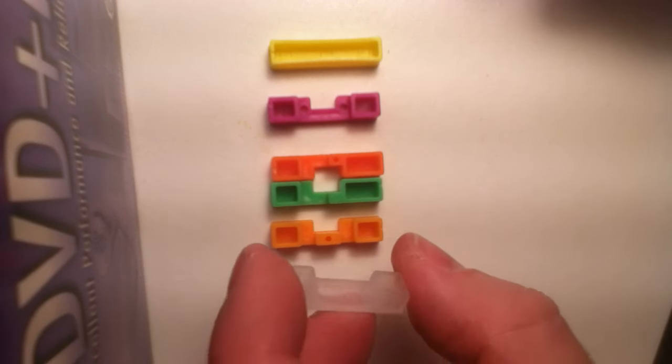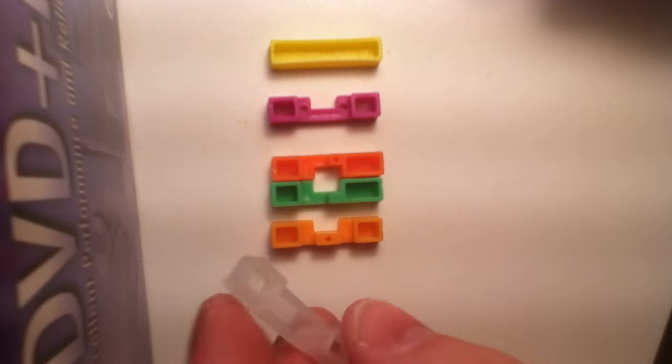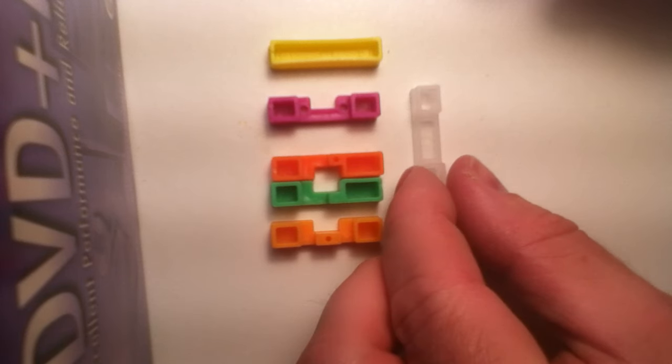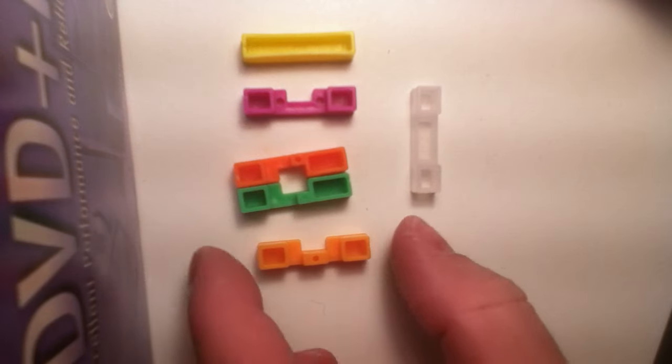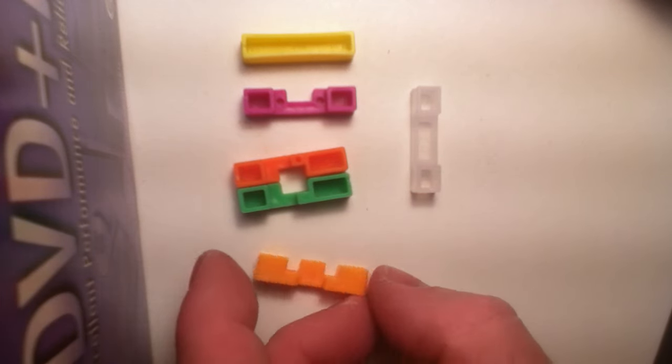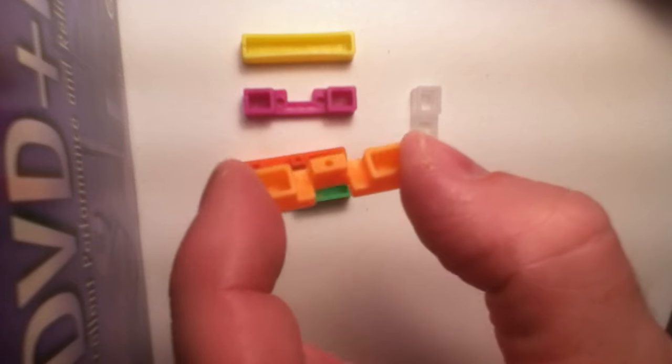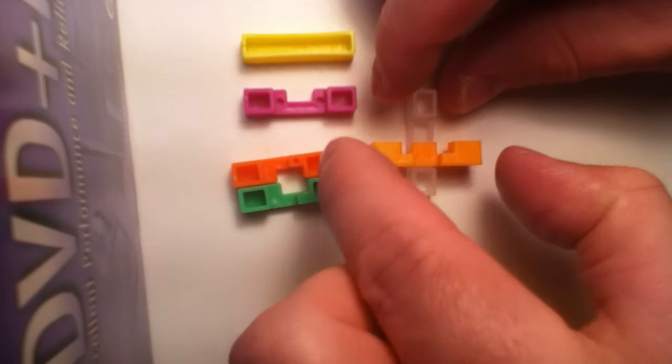The first piece that we're going to use to put this back together is kind of shaped like a U. We're going to lay that flat. I'm just going to slide these up. The second piece kind of looks like an E. That's going to lay flat on that first piece.